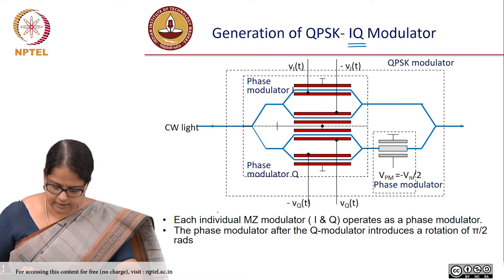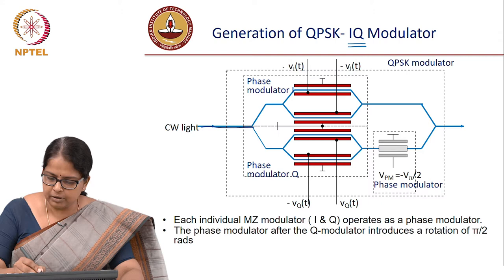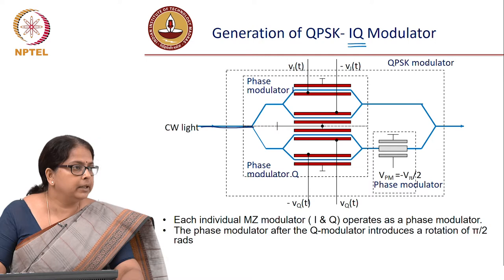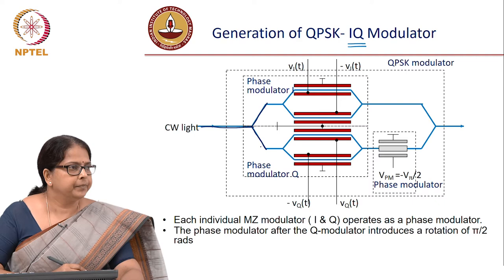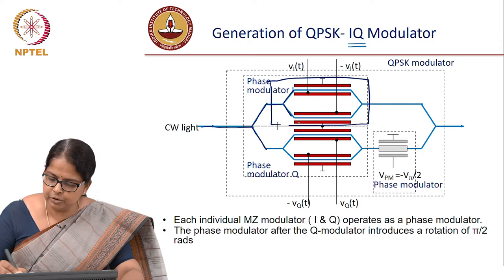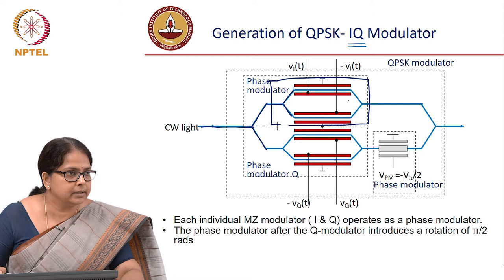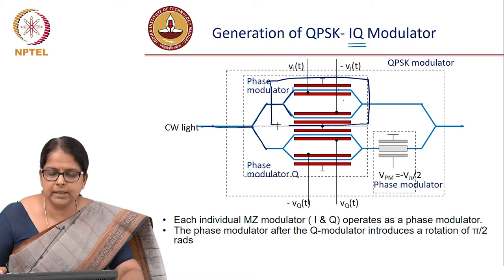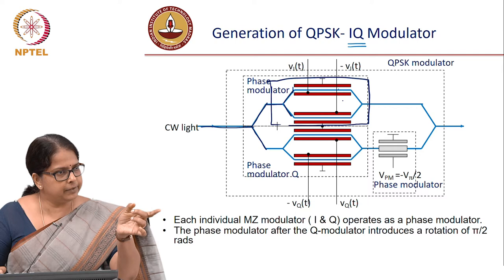Let us trace this patiently. An IQ modulator has this light entering where the modulator chip begins. The outer dotted line is one chip, one electro-optic material. You split your light, and then split again — this part you use as a phase modulator. This is like the intensity modulator we looked at — a Mach-Zehnder interferometer. You apply it as a phase modulator, meaning you will generate zero phase and pi phase.